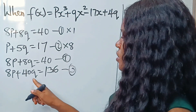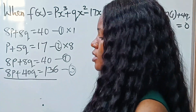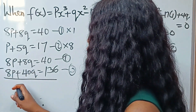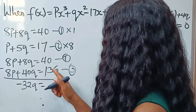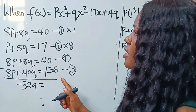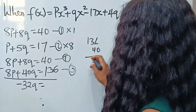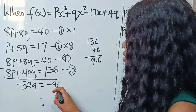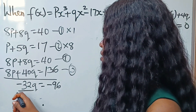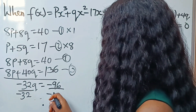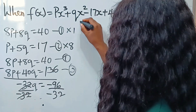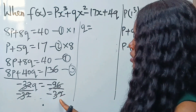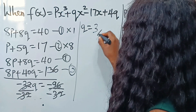So minus 32q equals minus 96. Dividing both sides by minus 32, we get q equals 3.